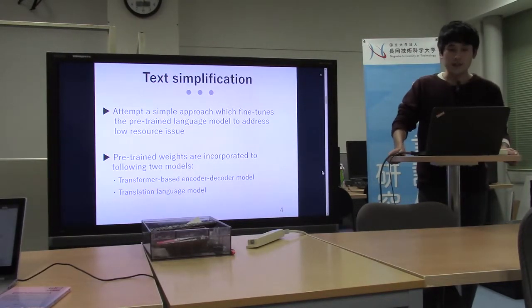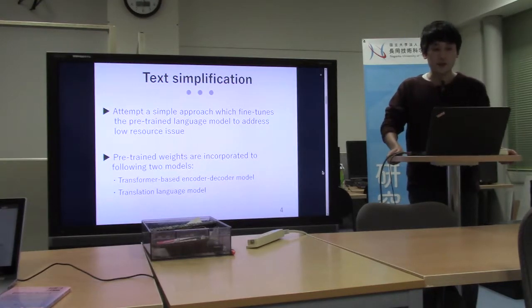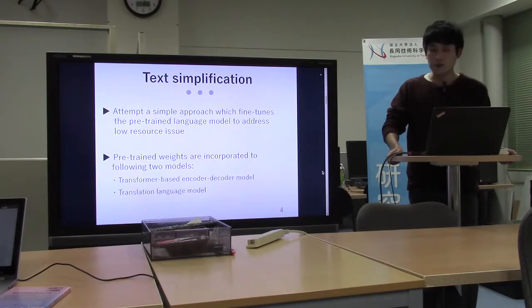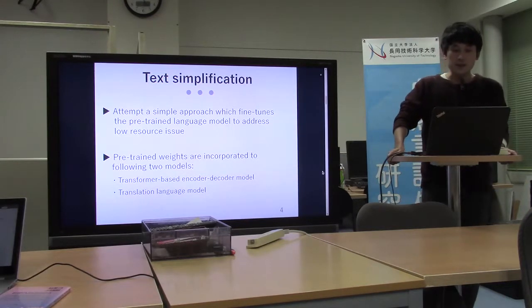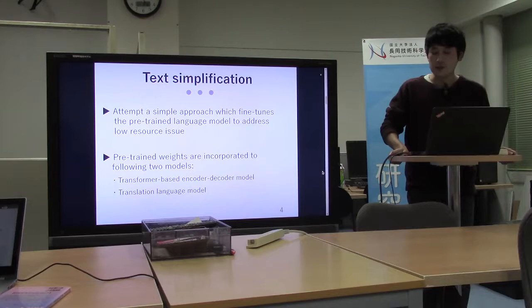Although the neural architecture needs a large parallel corpus, text simplification has only small data. Therefore, we attempt a simple approach which fine-tunes the pre-trained language model to address low-resource issues. Specifically, in our experiment, pre-trained weights are incorporated into the following two models: transformer-based encoder-decoder model and translation language model.